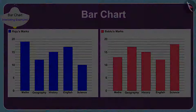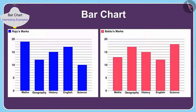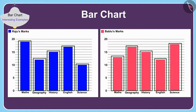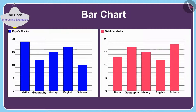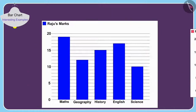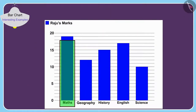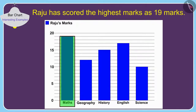Raju and Babloo made bar charts of the marks they scored. Children, by looking at the bar charts of Raju and Babloo, can you tell which subjects have they got the highest marks in? If you wish, you may find the solution by stopping the video.